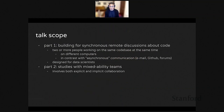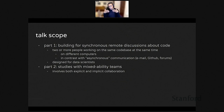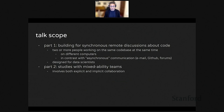In our research group we've looked at many kinds of collaboration, but in this talk I'll focus on two areas: first, tools we've built for synchronous remote discussions about code — meaning people communicating remotely but in the conversation at the same time; and second, studies we conducted with mixed-ability programming teams, specifically teams with one or more programmers who have visual impairments and one or more who do not.